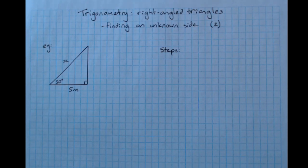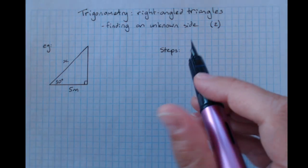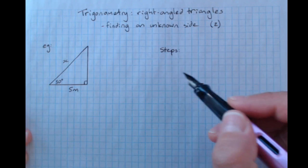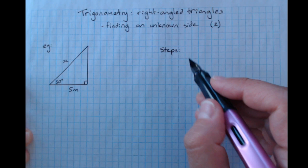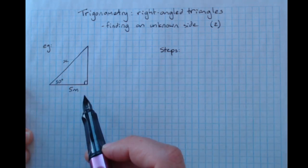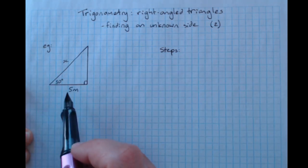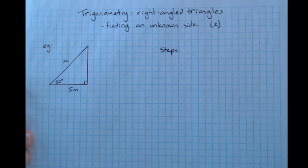Trigonometry with Right Angled Triangles, Finding an Unknown Side, Lesson 2. We've already gone through the steps for how to find an unknown side and the steps are going to be the same. We have a right angle triangle, we know one angle and one side and we want to find one of the other sides.